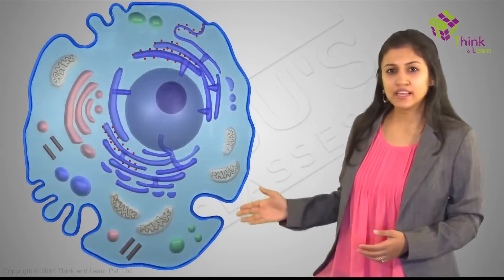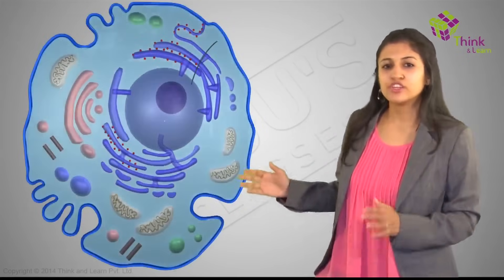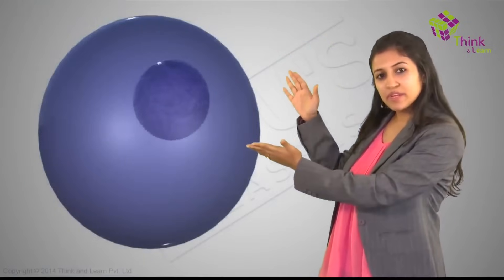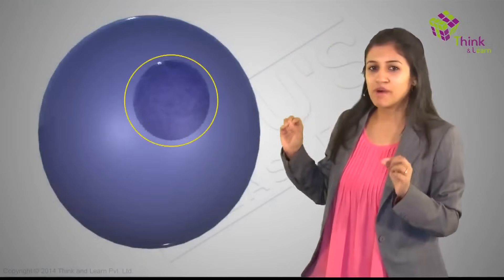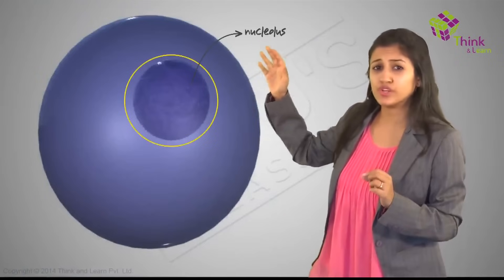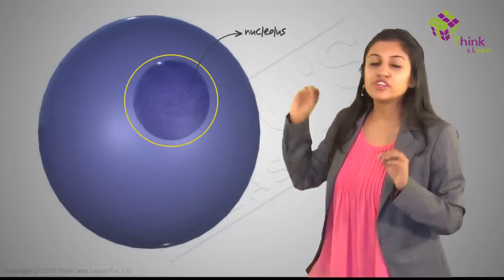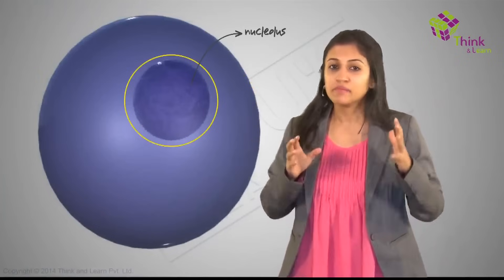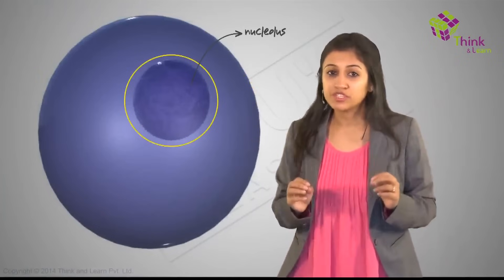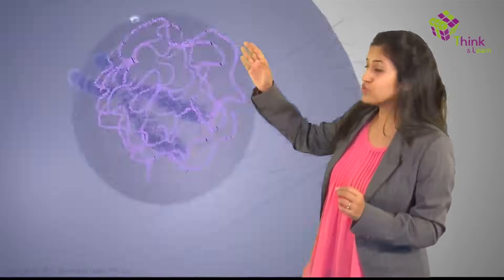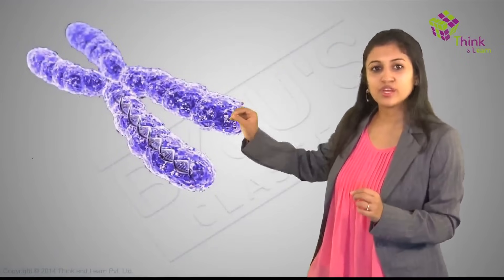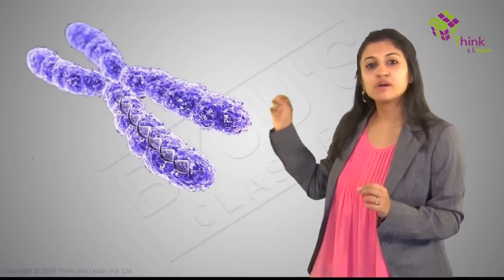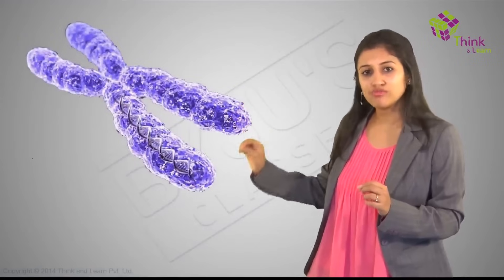If I take a typical cell over here, the nucleus is right here in the middle. Let's zoom in and see what's happening. This darker part over here is called the nucleolus. The nucleus takes decisions and makes important laws for the cell based on the information it gets from the chromosomes inside the nucleolus, which you can identify as a darker portion of the nucleus.